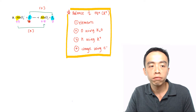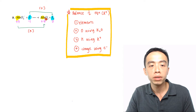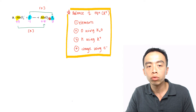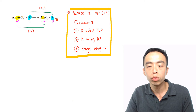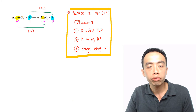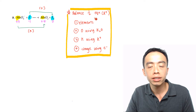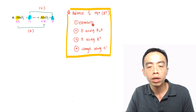We have an example here involving the redox reaction between MnO4- and I- to give MnO2 and I2. If I want to balance this redox reaction in acidic medium, these are the steps that we need to do.